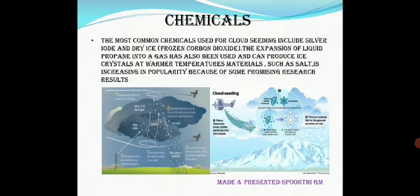The most commonly used chemicals in cloud seeding are silver iodide and dry ice. Expansion of liquid propane into a gas is also used, and this can produce ice crystals at warmer temperatures. Materials such as salt have also increased in popularity because of some promising research results.